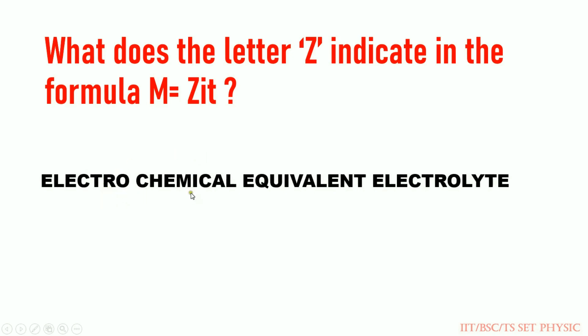Z is the electrochemical equivalent of the electrolyte. Z is the material's electrochemical equivalent value. This is the highest for silver.